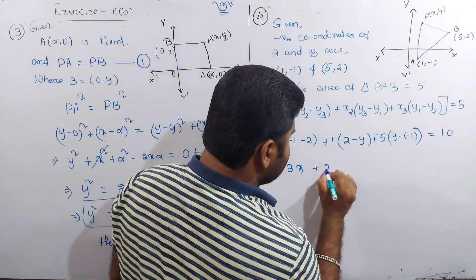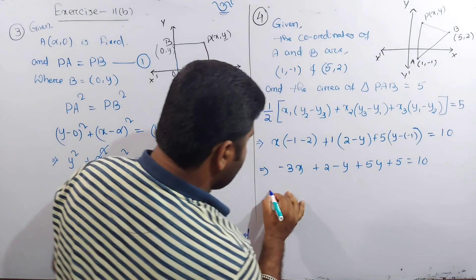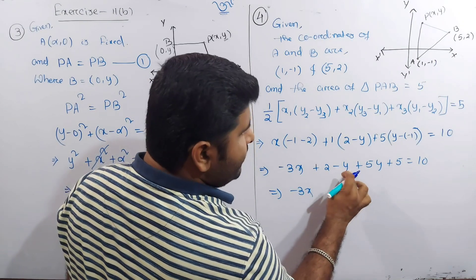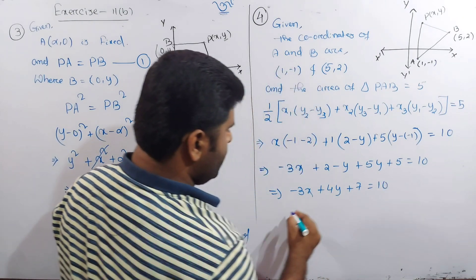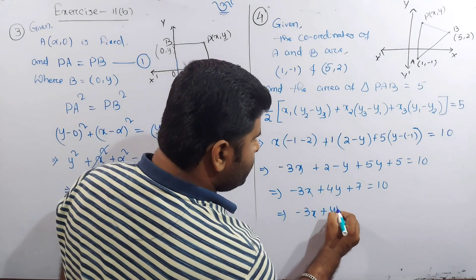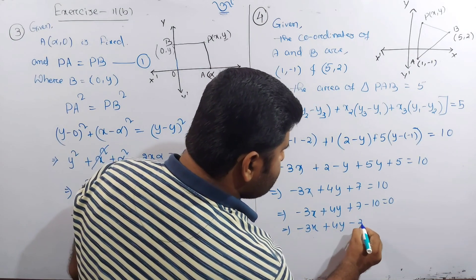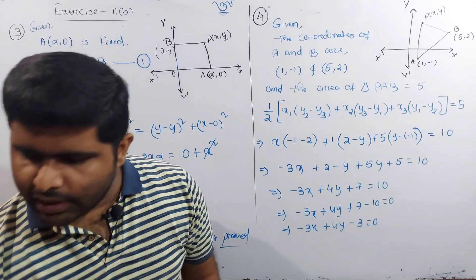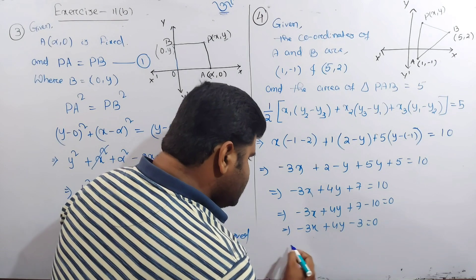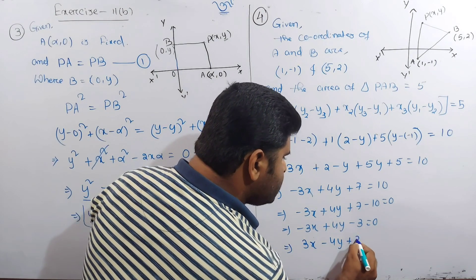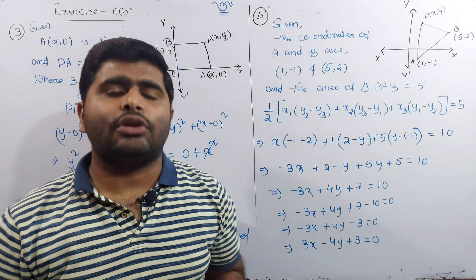Simplifying: 2 minus 3x minus y plus 5y minus 4 equals 10, which gives −3x + 4y + 7 − 10 = 0, so −3x + 4y − 3 = 0, meaning 3x − 4y + 3 = 0. This is the locus of point P.